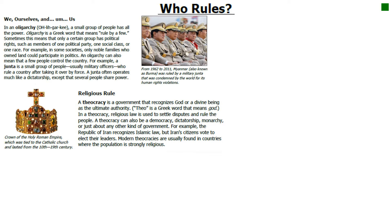A theocracy is a government that recognizes God or a divine being as the ultimate authority. Theo is a Greek word that means God. In a theocracy, religious law is also used to settle disputes and rule the people. A theocracy can also be a democracy, dictatorship, monarchy, or just about any other kind of government. For example, the Republic of Iran recognizes Islamic law, but Iran's citizens vote to elect their leaders. Modern theocracies are usually found in countries where the population is strongly religious.